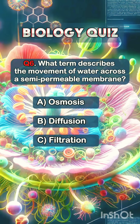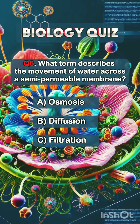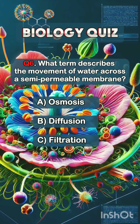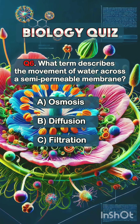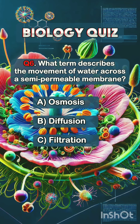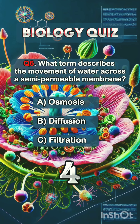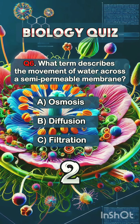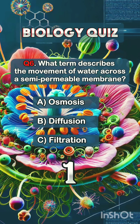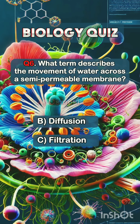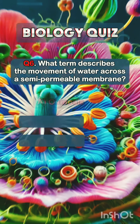Question 6. What term describes the movement of water across a semi-permeable membrane? Answer A: osmosis.